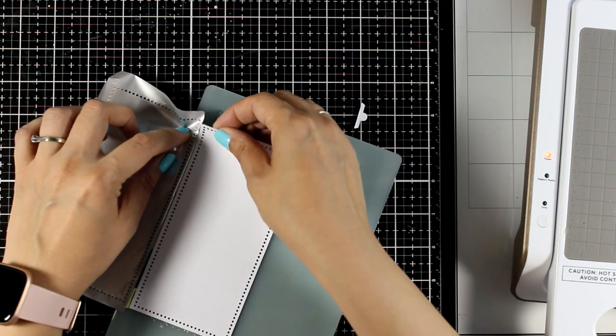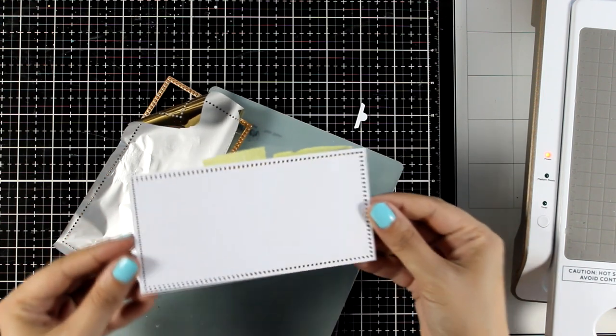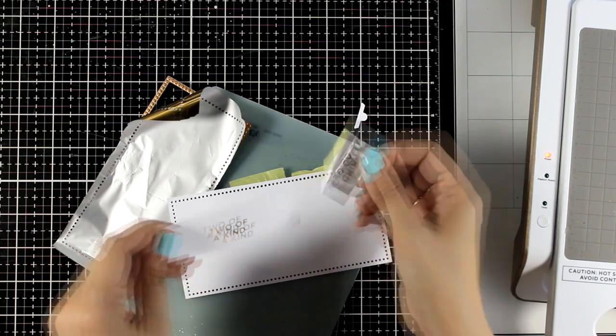And again this is 3x6. This is going to cover up completely my card front. And I did use gold foiling for my card today. And I do have my sentiment foiled as well.